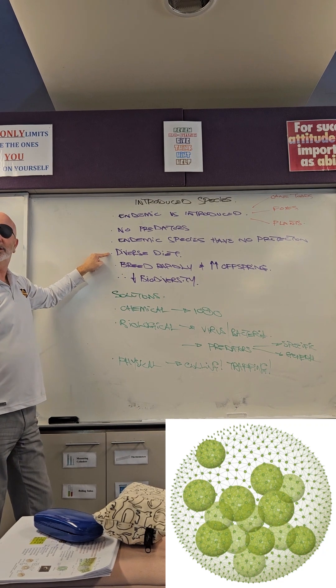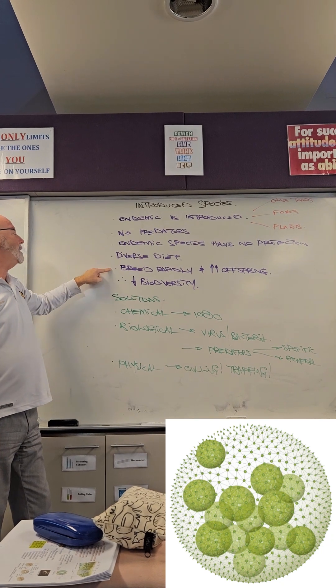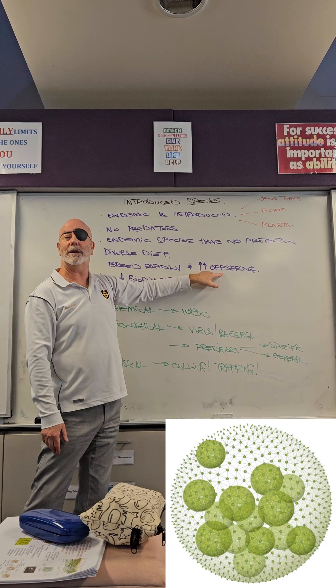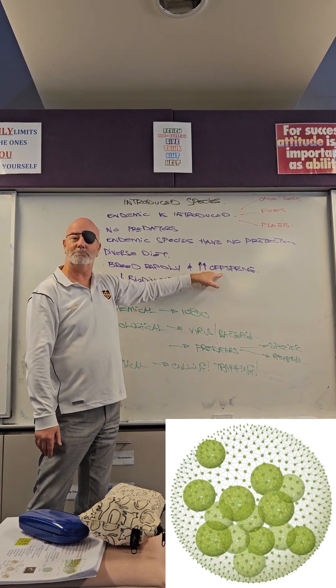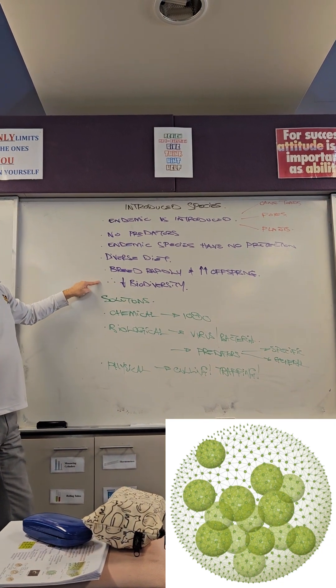The introduced species has a diverse diet which means it eats almost anything. The introduced species also reproduces rapidly and has lots of offspring like the cane toad can lay thousands of eggs in a city. And that leads to a drop in biodiversity.